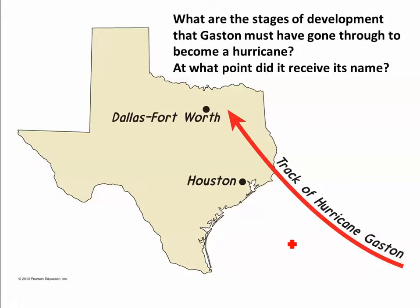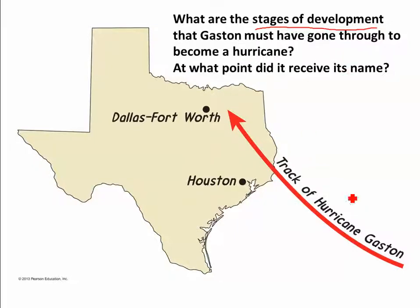Let's answer some questions. First, what are the stages of development that Gaston must have gone through to become a hurricane, and at what point did it receive its name?